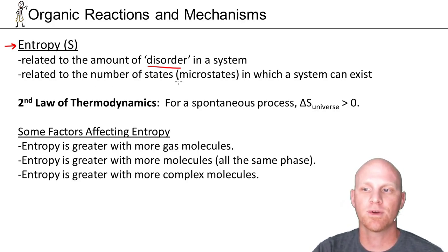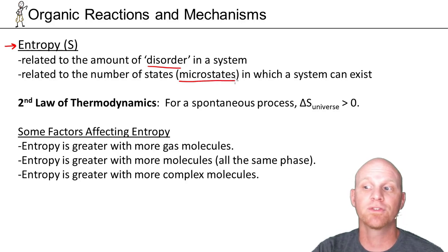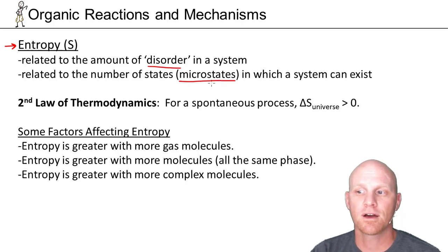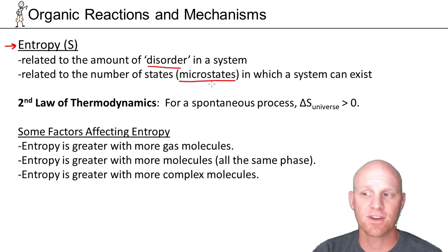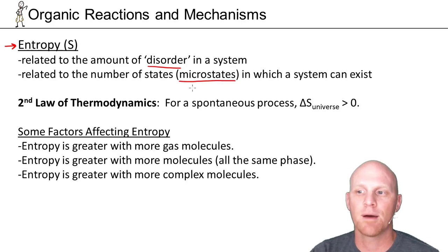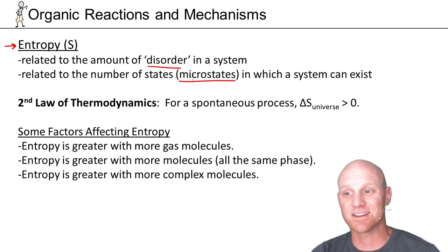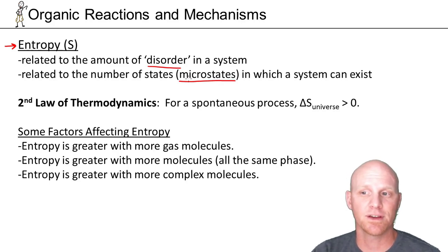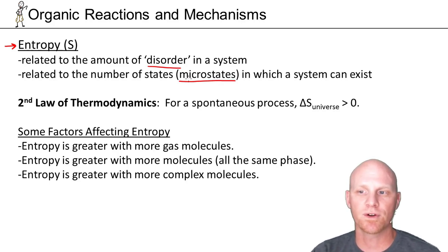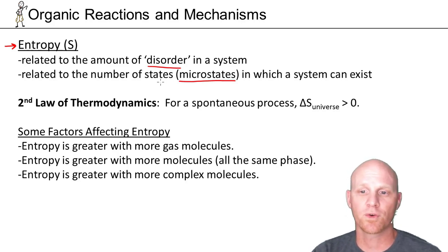We often say entropy is related to the number of states or microstates, and there's an equation involving Boltzmann's constant for that, which isn't so important for organic chemistry. That's where the idea becomes more about statistics and getting more microstates rather than an exact definition of disorder. But the big takeaway is just to correlate entropy with disorder or randomness — more entropy means more randomness, more disorder.